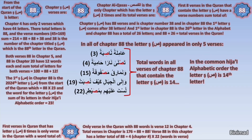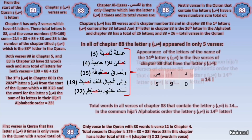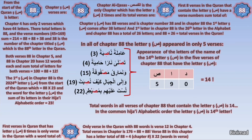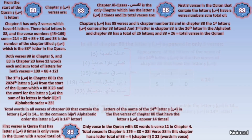To further confirm the connection of the five verses with the letter Saad — other than they are the only verses in the chapter with the letter Saad, and other than the total words being 14 — we look at the letters that spell the name of the letter Saad once again. These letters appeared in all five of those verses a total of exactly 14 times. This is truly amazing, but we must keep going.